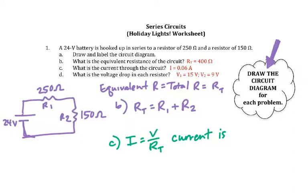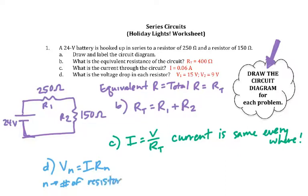Once you know the current, you can do letter D, which is for voltage drop. The formula on your sheet for that is Vn equals I times Rn. The n just specifies the resistor number. So if you want to find the voltage being used by resistor 1, you would say V1 equals I times R1. You're going to use the answer from letter C for I, then multiply by the resistance for R1.